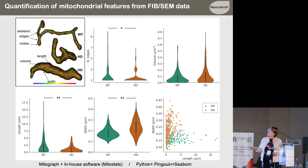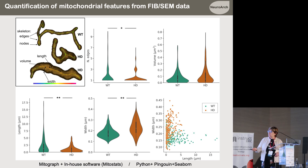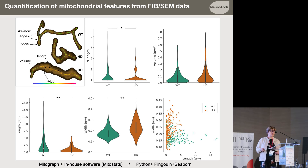We made an objective quantification of all the mitochondria and took measurements across all of them. We found that indeed there were significant differences. The number of edges in HD is significantly lower. Surprisingly, the total volume of mitochondria was not significantly different. However, mitochondria in HD are shorter and wider, as shown in the scatter plot — wild-type mitochondria are long and slim, while in the HD model they are shorter and wider — indicating mitochondrial fragmentation and fission in the HD model.